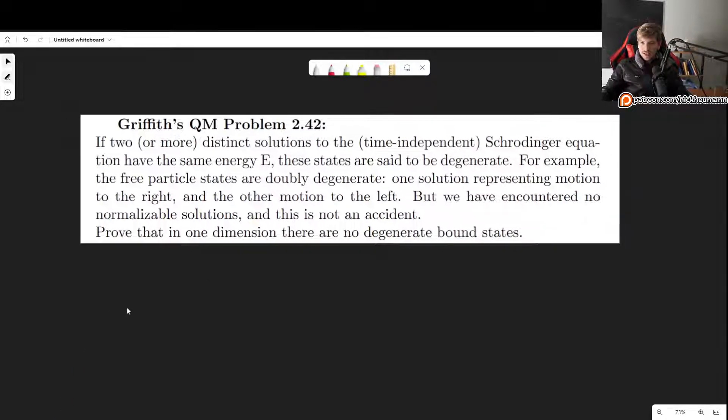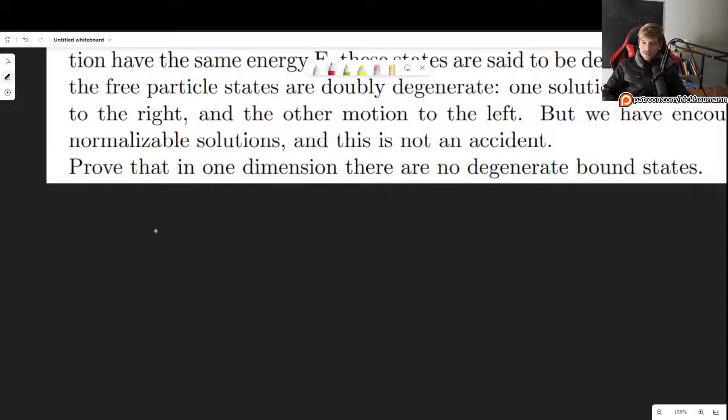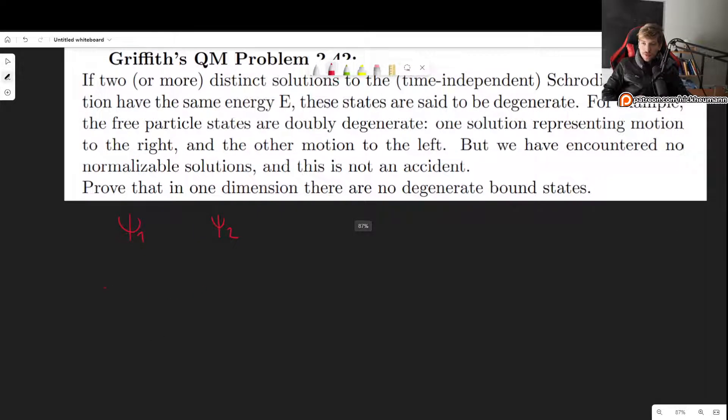So let's take a look at that. How do we do that? Well, let's say that we have ψ₁ and ψ₂, which are two degenerate bound states. And each one of them thus satisfies the Schrödinger equation for some potential. So -ℏ²/2m d²ψ₁/dx² + Vψ₁ = Eψ₁, and ψ₂ also satisfies the Schrödinger equation.